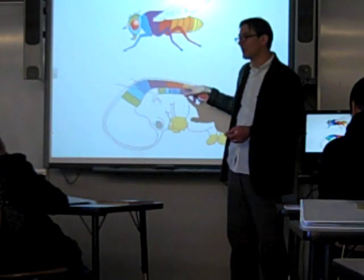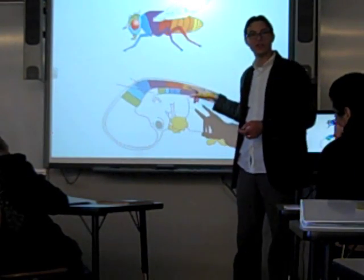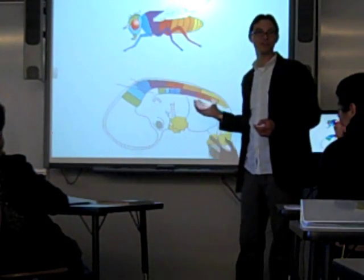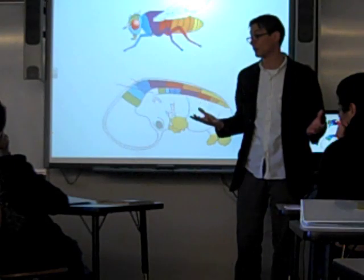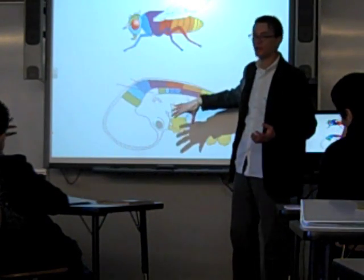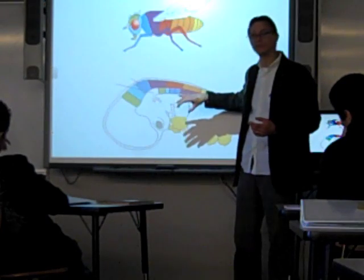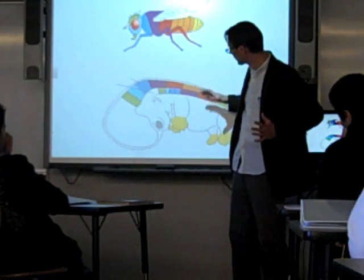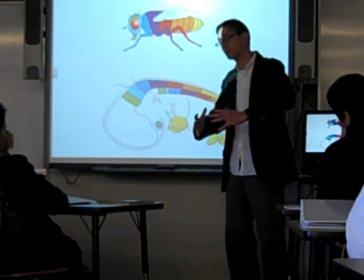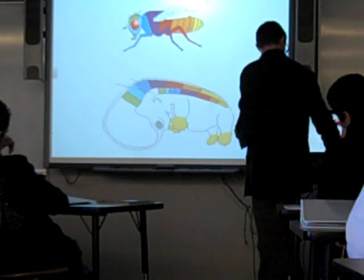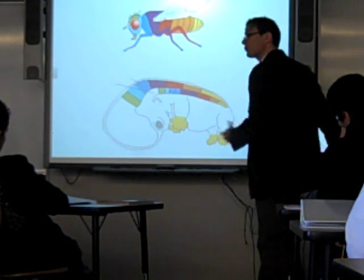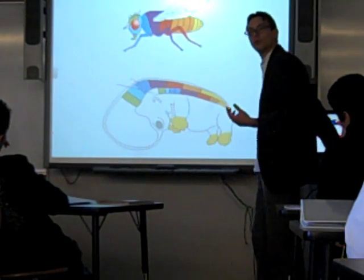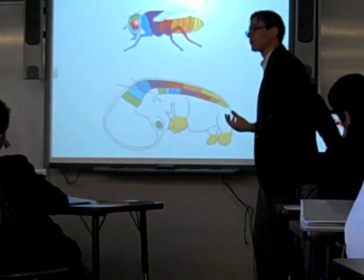If you looked at the same mutation in a mouse, we wouldn't expect the mouse to grow an extra set of wings — the mouse doesn't even know how to make one pair of wings. But what the mouse does know how to make, under the direction of these particular control proteins, is a rib cage. Some of these proteins say 'make ribs here.' So we would expect that the same sort of mutation that causes double wings in a fly might have something to do with extra ribs in a mouse.